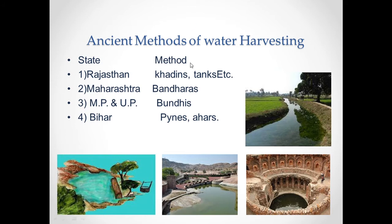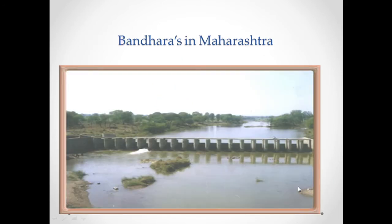Here are some ancient methods of water harvesting. In Rajasthan: khadins and tanks. In Maharashtra: Bandharas. In Madhya Pradesh and Uttar Pradesh: Bandhis. In Bihar: Pines and Ahars. These are traditional structures that ensure people get a supply of water throughout the year. You may see the image of Bandharas in Maharashtra — they are very common and found in most villages on water resources.